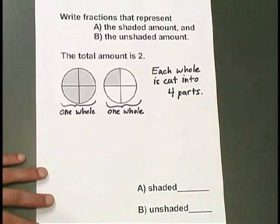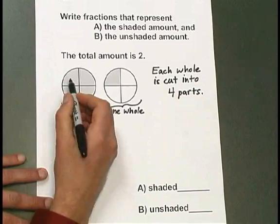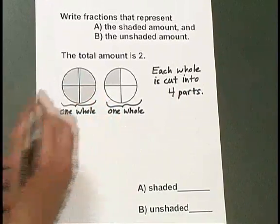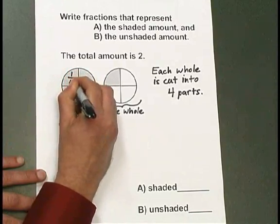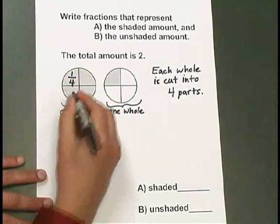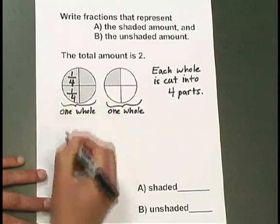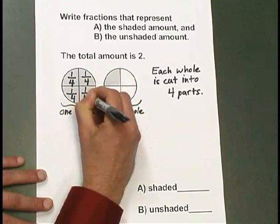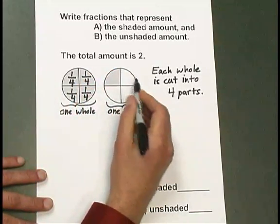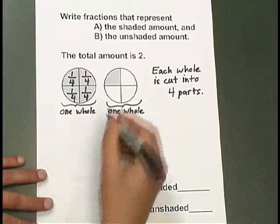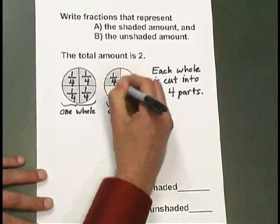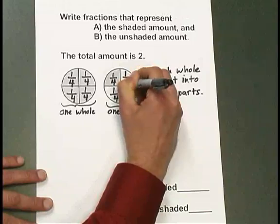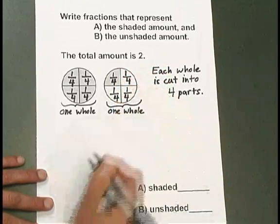Since each whole is cut into 4 parts, any one of those parts we're going to call 1 fourth. So this piece is 1 fourth, this piece is 1 fourth, here's 1 fourth, here's another fourth. The second whole is also cut into 4 parts, so each one of those parts is 1 fourth of 1 whole.